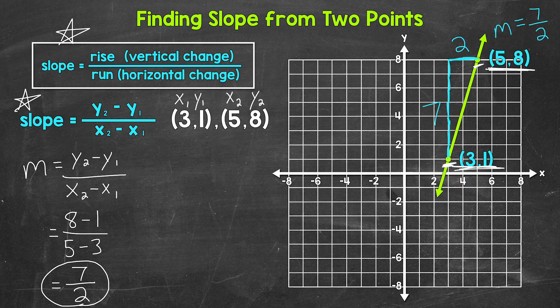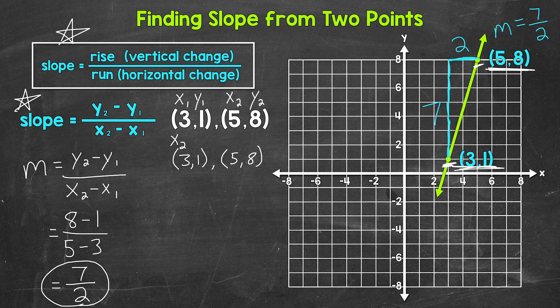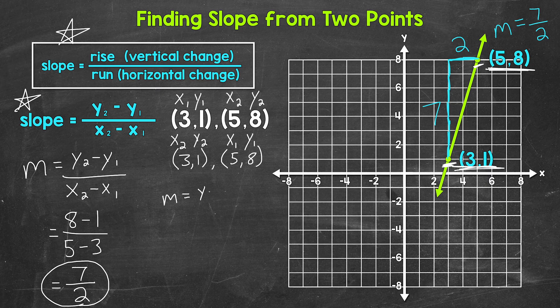Now before moving on, I want to show real quick that switching the first and second point will still give us the same slope. And what I mean by that is using 5,8 as x1 and y1 and then 3,1 as x2 and y2. So rewriting these, we have 3,1 and 5,8. So we're going to switch here. 3 is going to be x2 and 1 is going to be y2. 5 is going to be x1 and 8 is going to be y1. So slope equals y2 minus y1 over x2 minus x1.